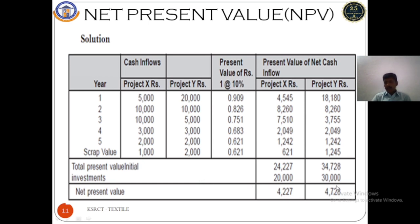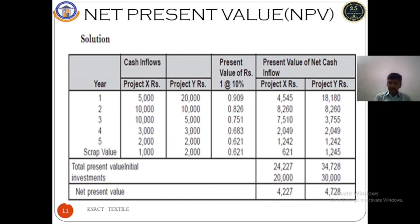The net investment for Project X is 20,000 and for Project Y is 30,000. So the NPV for Project X is 24,227 minus 20,000 = 4,227, and for Project Y it is 34,078 minus 30,000 = 4,078. Both NPVs are positive, but since Project X has a higher NPV of 4,227 compared to Project Y's 4,078, we accept Project X and reject Project Y.